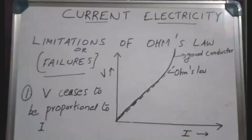Here is a V-I graph. Ohm's Law will be shown in shape as a straight line inclined to both the x and y axes. In the V-I graph, there is a dashed line denoting Ohm's Law and a bold line representing a good conductor case.